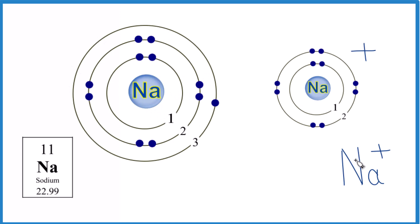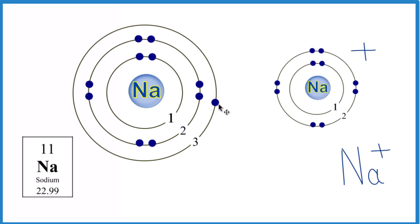For Na+, we actually lost an electron. So we lost this electron right here, that went away, and that meant that this shell was gone, this energy level, and then we had more protons. We had 11 protons and only 10 electrons, so it made it Na+.